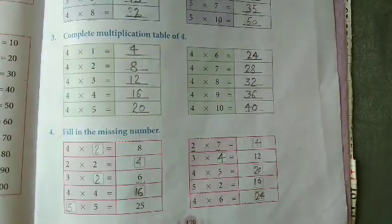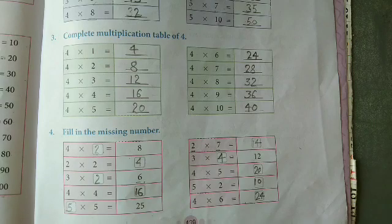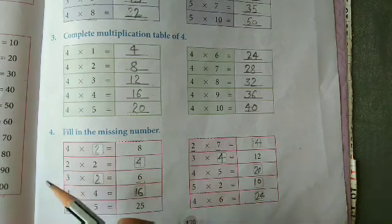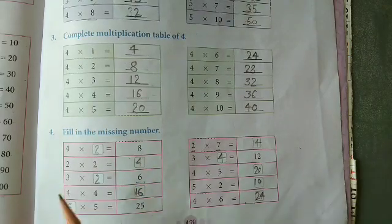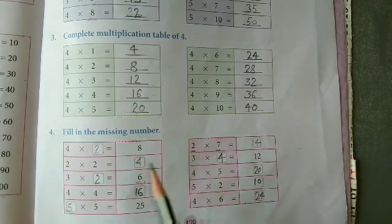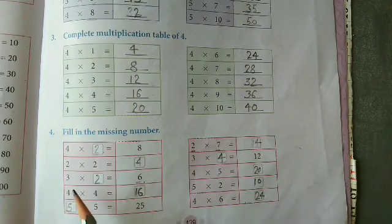Next, filling the missing number. 1 four is 4, 4 twos are 8, 3 twos are 6, 4 fours are 16, 5 fives are 25.